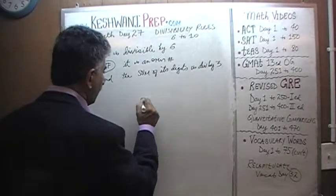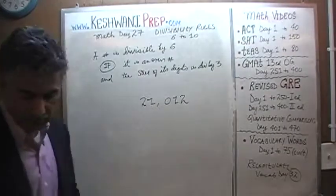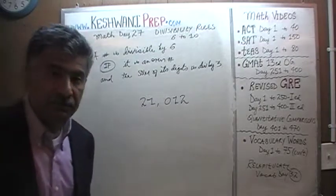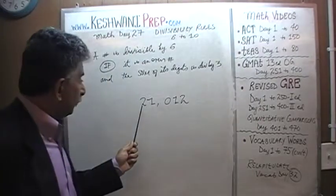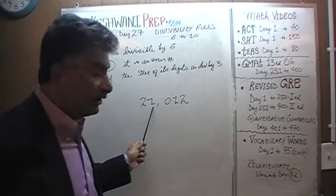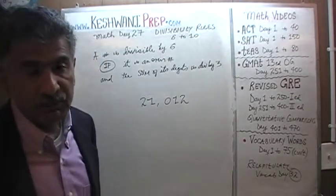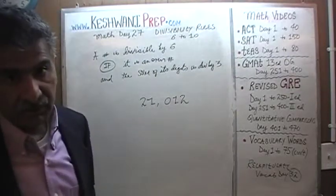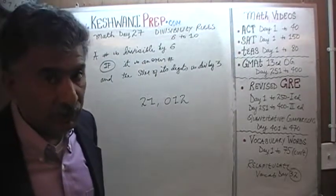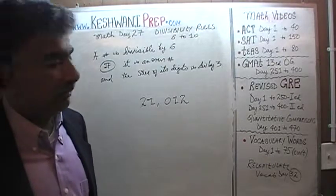Let's take a look at one more: 21,012. 21,012 is an even number, which means it's divisible by 2. Now check the sum of digits: 2 plus 1 is 3, and 1 plus 2 is 3 — the sum of all digits is divisible by 3. This means the number is divisible by 3 as well. Since it's both even and divisible by 3, it should be divisible by 6.